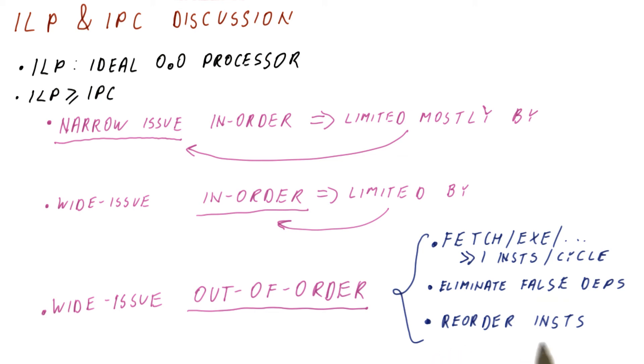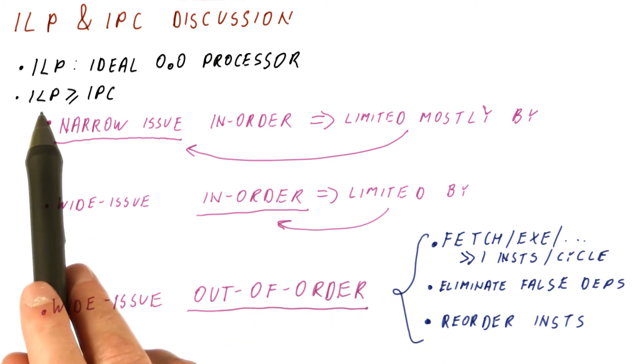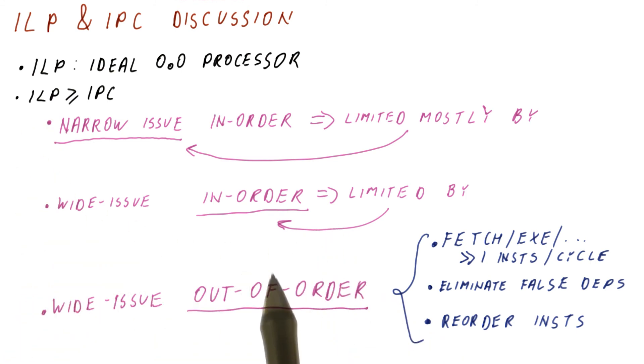And finally, it should be able to reorder instructions so that we can execute instructions out-of-order, meaning that our execution order should be kind of similar to what we did for the ILP and not for what we did for the in-order processors.